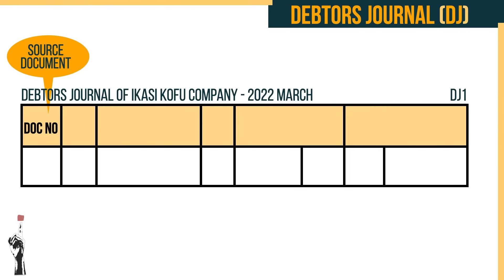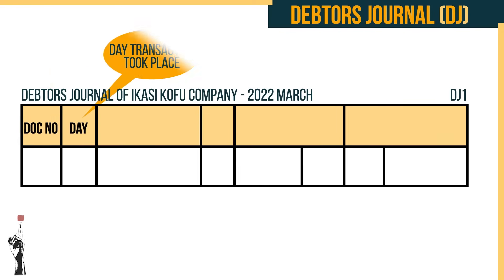Firstly, the document number column is the first column. This is the source document that was used — for example, when an invoice was issued you will write the number of the invoice in this column. Note that the invoice numbers will be in numerical order: if the first is 01 then the next will be 02 and so forth. Secondly, the day column is used to write the day on which the transaction took place.